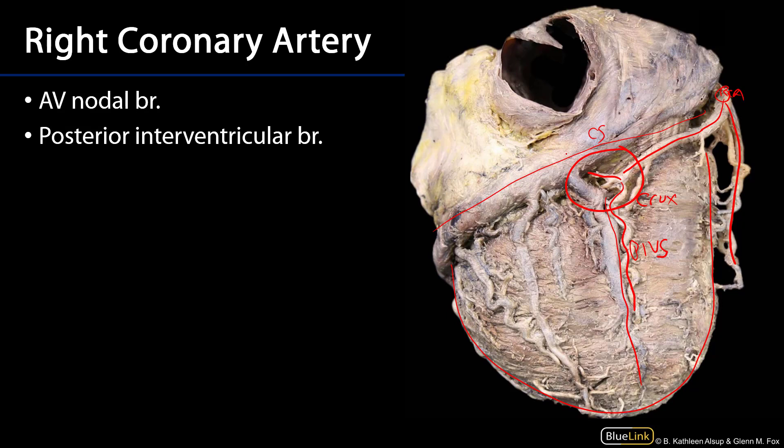The posterior interventricular branch supplies blood to the interventricular septum — a large and important portion of the ventricular walls, as it conducts the bundle branches down from the bundle of His. This is an example of a right dominant heart, because the RCA is the only blood supply to the crux. There are also left dominant hearts, where the LCA is the exclusive source to the crux, and co-dominant hearts, where both RCA and LCA supply the crux.